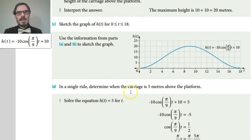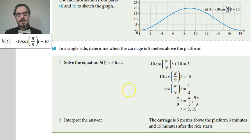In a single ride determine when the carriage is 5 meters above the platform. Well we can see a hint here. There's one somewhere around 3 minutes and there's one somewhere around 15 minutes. Is it exactly that? Well to do that we just solve the equation. We write this equal to 5. Do some algebra.